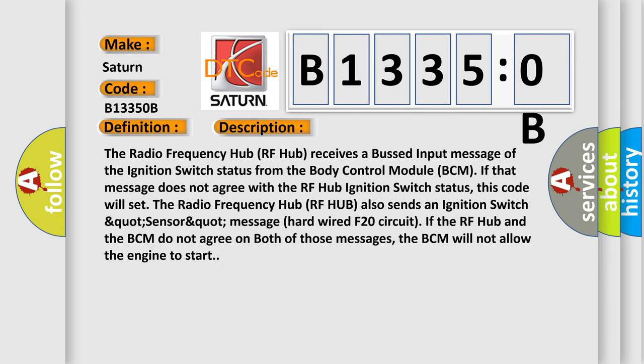The radio frequency hub RF hub receives a bussed input message of the ignition switch status from the body control module BCM. If that message does not agree with the RF hub ignition switch status, this code will set. The radio frequency hub RF hub also sends an ignition switch status message on the hardwired F20 circuit. If the RF hub and the BCM do not agree on both of those messages, the BCM will not allow the engine to start.